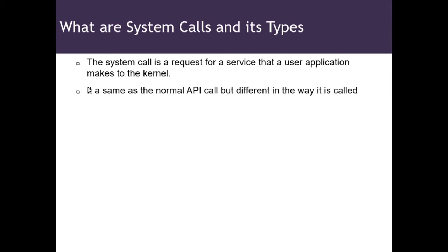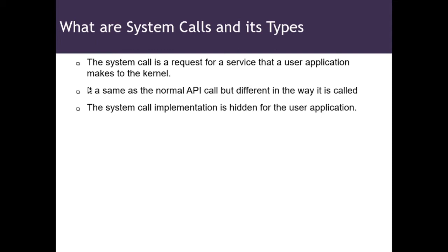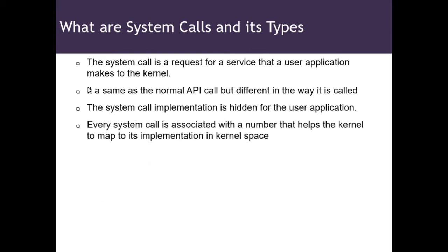The system call implementation is hidden from the user application — the user application doesn't know about the code for the operation of that system call, as the code resides within the kernel space. Every system call is associated with a number, and that helps the kernel map it to its implementation in the kernel space. When we call a system call from user space, we pass a number so that it can call the API mapped to that particular number within the kernel space.